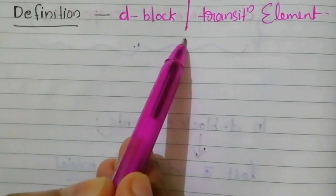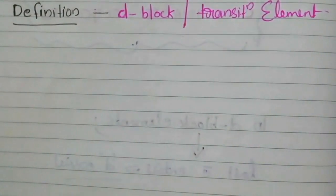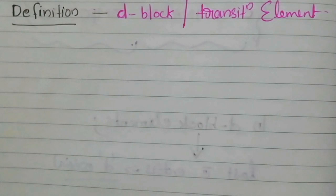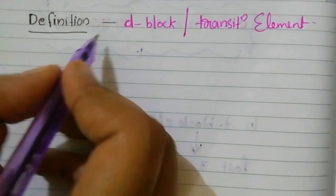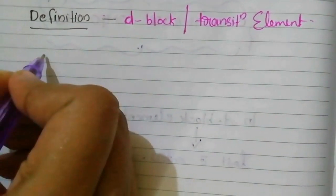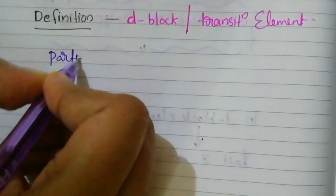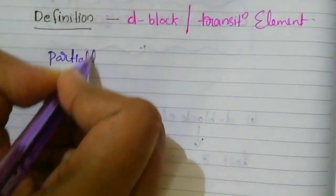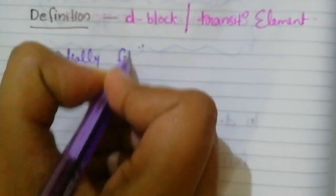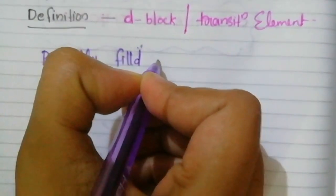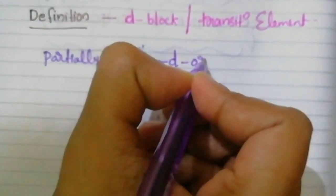Now let's move to the definition of D block elements. We already defined them based on where the last electron enters. But here we will define D block elements in a different way: a D block element or transition element must contain a partially filled D orbital.